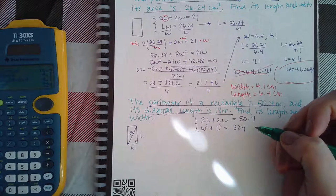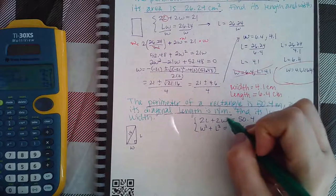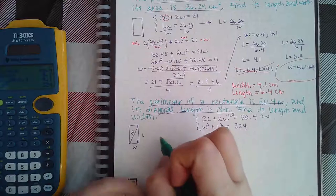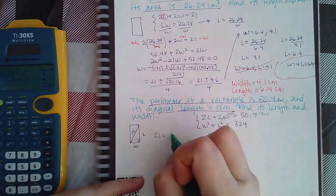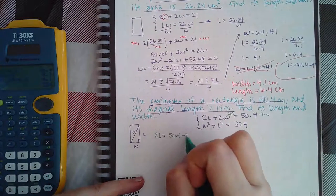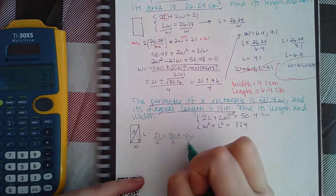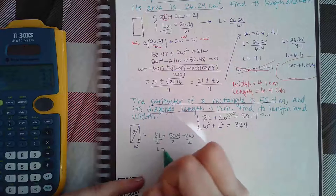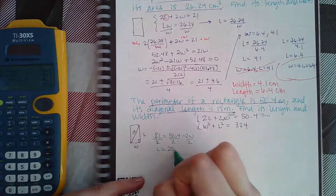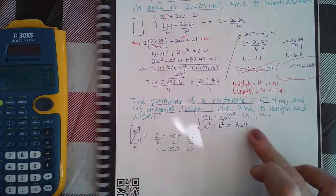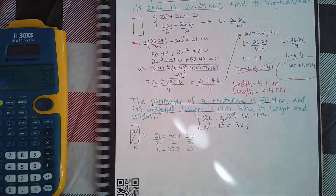I'm actually going to minus 2W on both sides so that I end up with 2L equals 50.4 minus 2W. Then to completely get L by itself, I'm going to divide by 2, so I get 25.2 minus W.